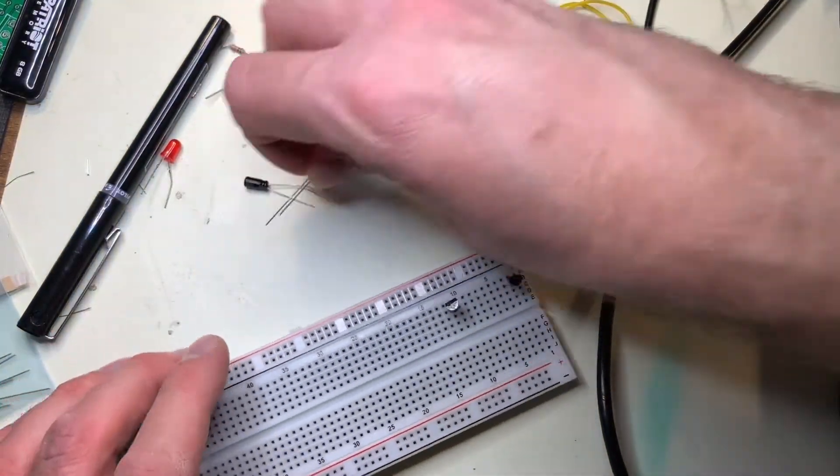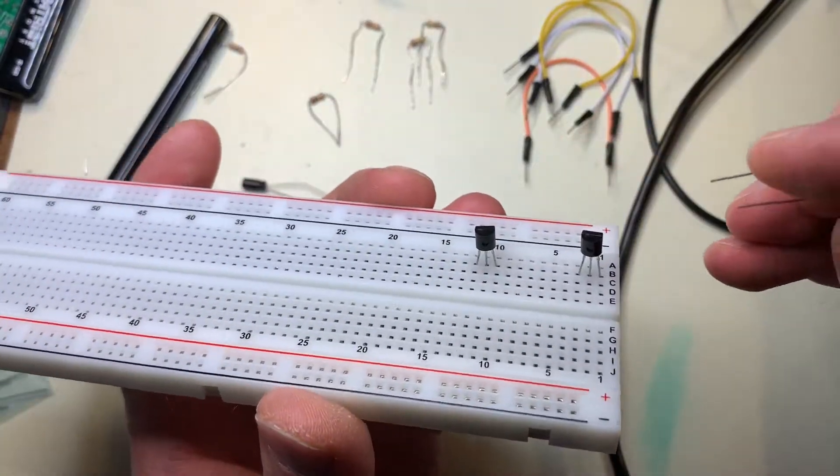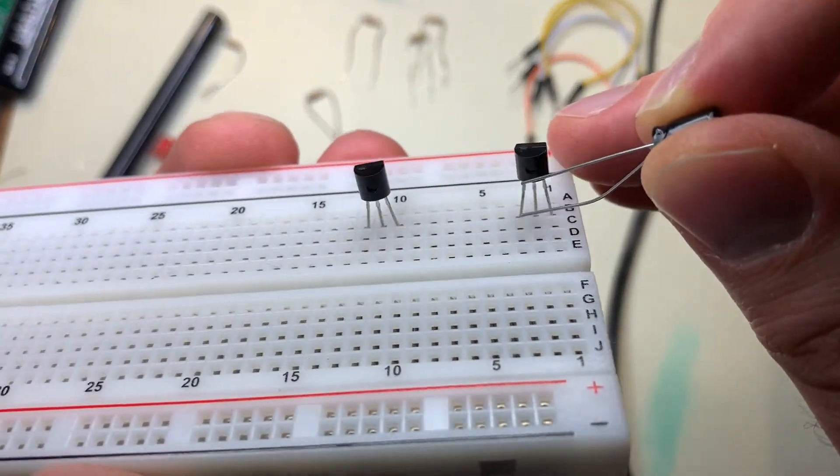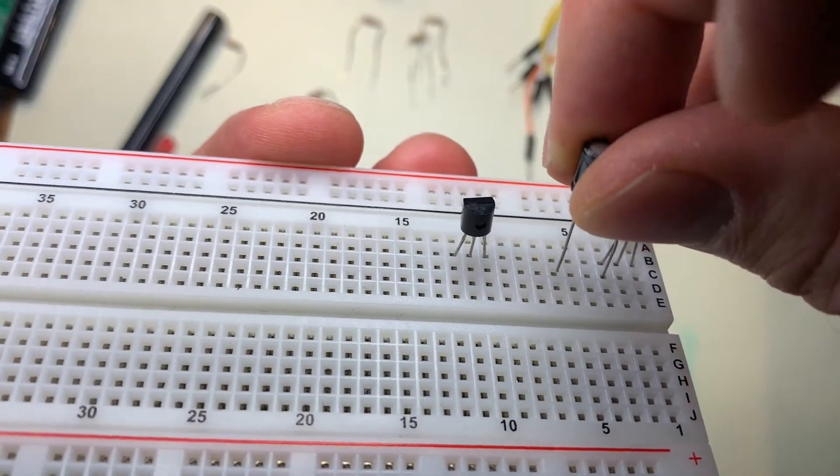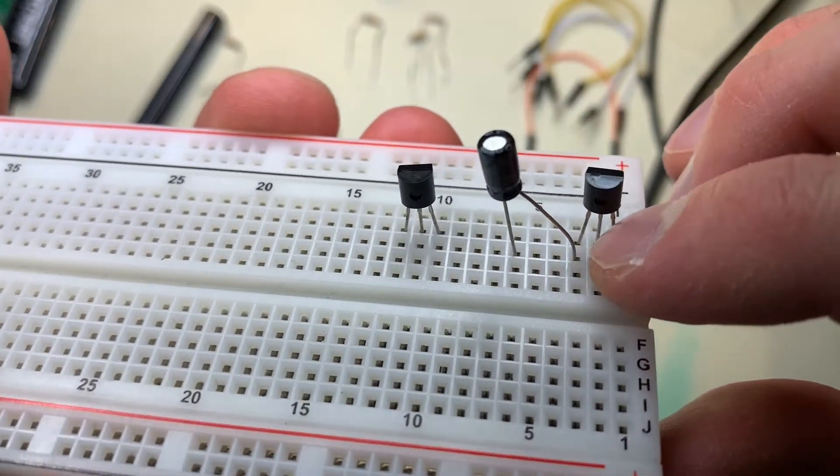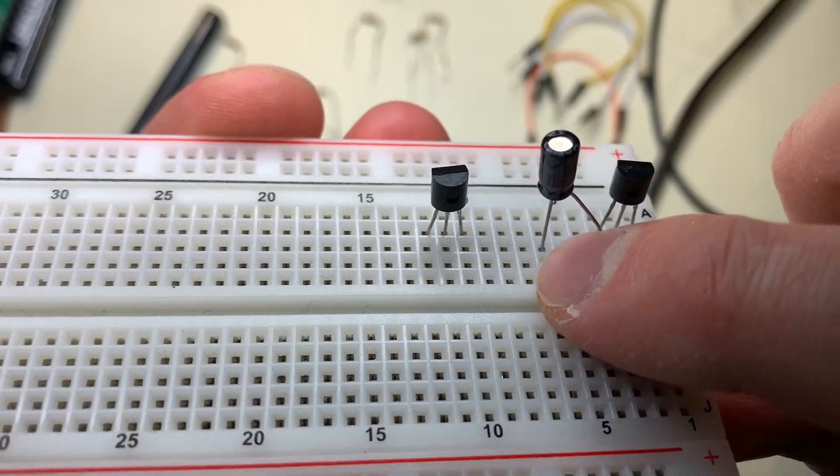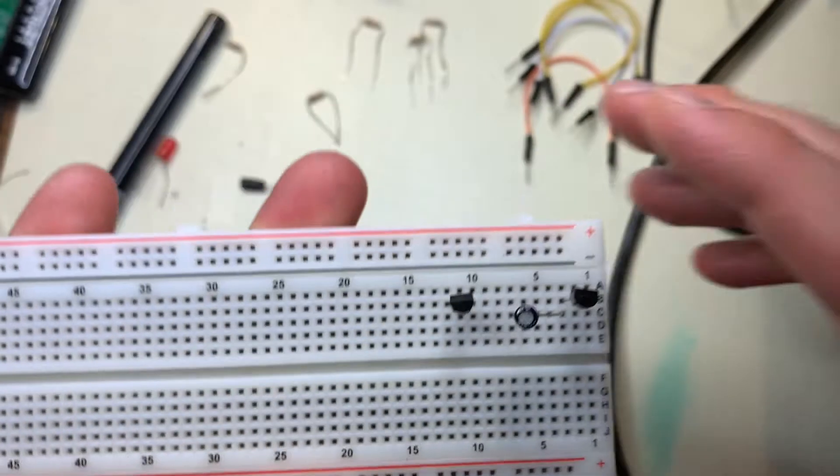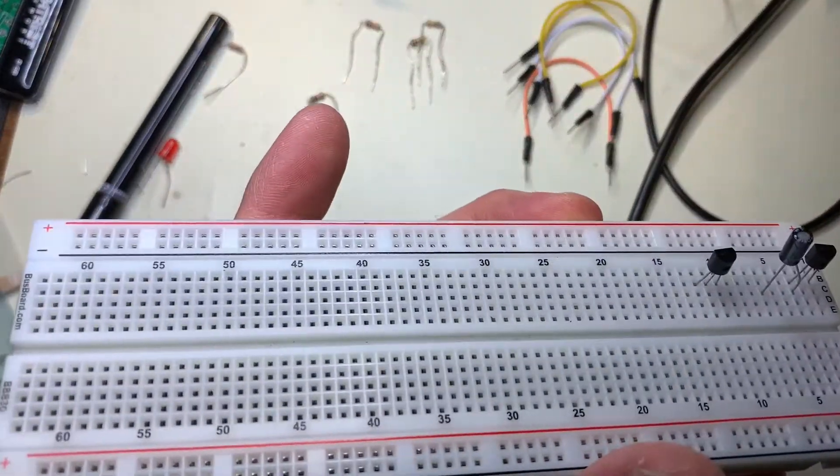So we can take our 10 microfarad capacitor, and the collector is going to be the first pin right here, and put it between like that. So the long lead is going to the first pin, and then the shorter lead, the negative lead, is going to an empty row right now, or empty column. And the same thing for the other side.